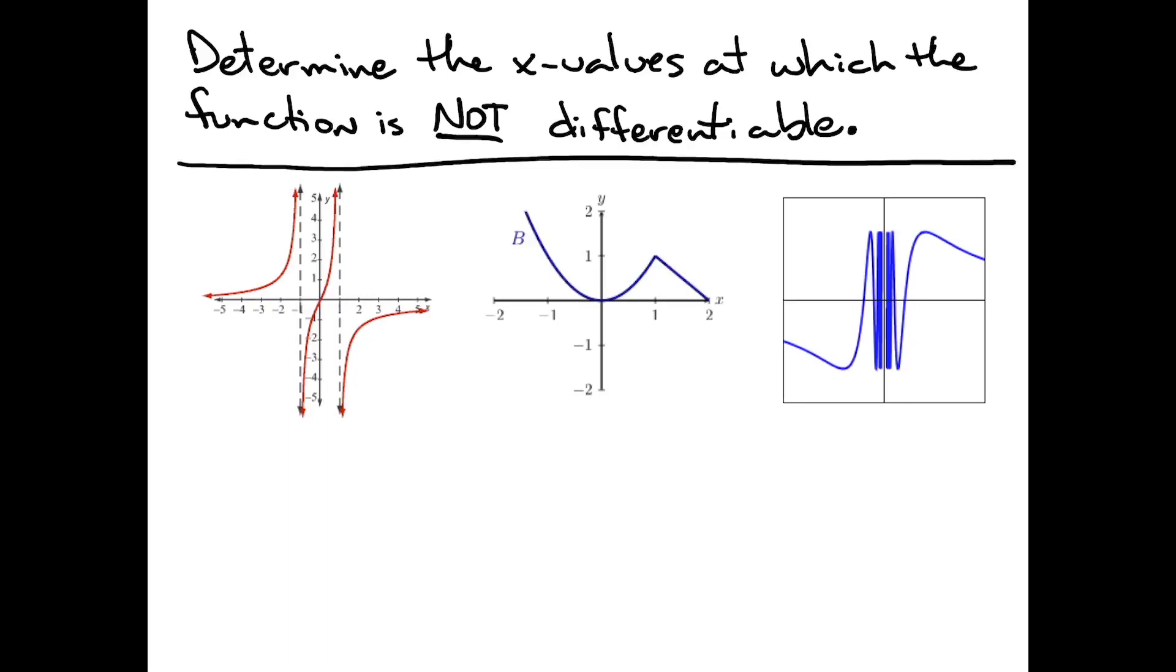There's only a certain number of scenarios where a function is not differentiable, and these are three examples of that. In this first function, we have infinite discontinuity going on. It can be called unbounded behavior or an essential discontinuity.